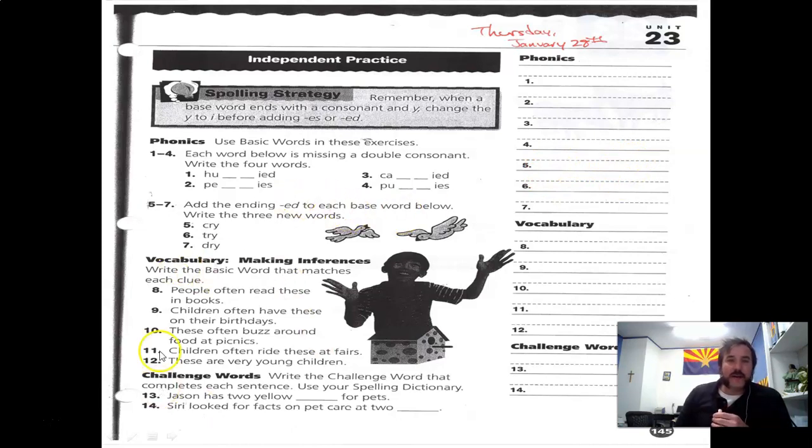Numbers eight through twelve: write the basic word that matches each clue. You do need to have your spelling book open at unit 23. People often read these in books, what do they read? Stories, right. So for number eight, you write stories here, of course spelled correctly.